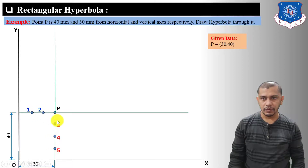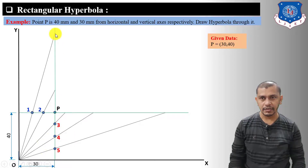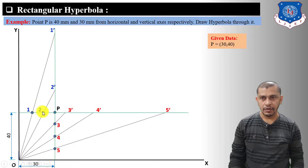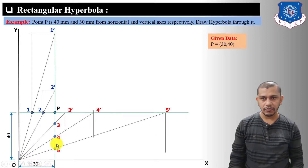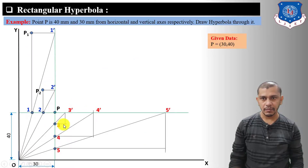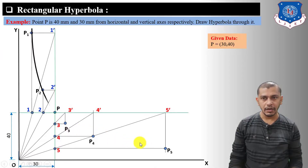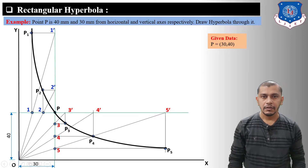Connect points 1, 2, 3, 4, 5 to the origin and extend these lines to the horizontal and vertical lines, marking points 1', 2', 3', 4', 5'. From 1 and 2 draw lines parallel to the y-axis, and from 1' and 2' draw lines parallel to the x-axis. From 3', 4', 5' draw lines parallel to the y-axis, and from 3, 4, 5 draw lines parallel to the x-axis. Mark intersection points P1, P2, P, P3, P4, P5, then draw a freehand curve through these points — this is the rectangular hyperbola.